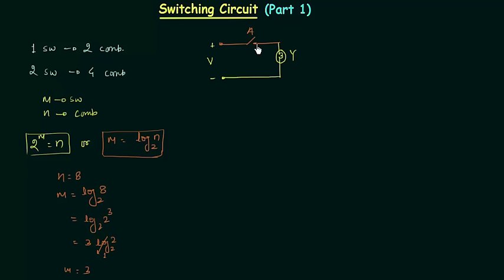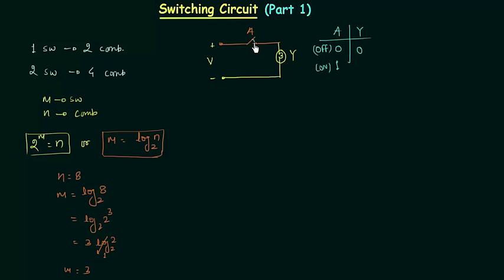If switch A is closed I will consider it 1; if switch A is open I will consider it 0. We can have a truth table: A is the input, Y is the output. When A is 0 — meaning the switch is open — the bulb will be off, so Y is 0. When A is 1 — meaning the switch is closed — there is a flow of current through the bulb and it will glow, so the output is 1. This is a simple series arrangement for the switch and bulb.